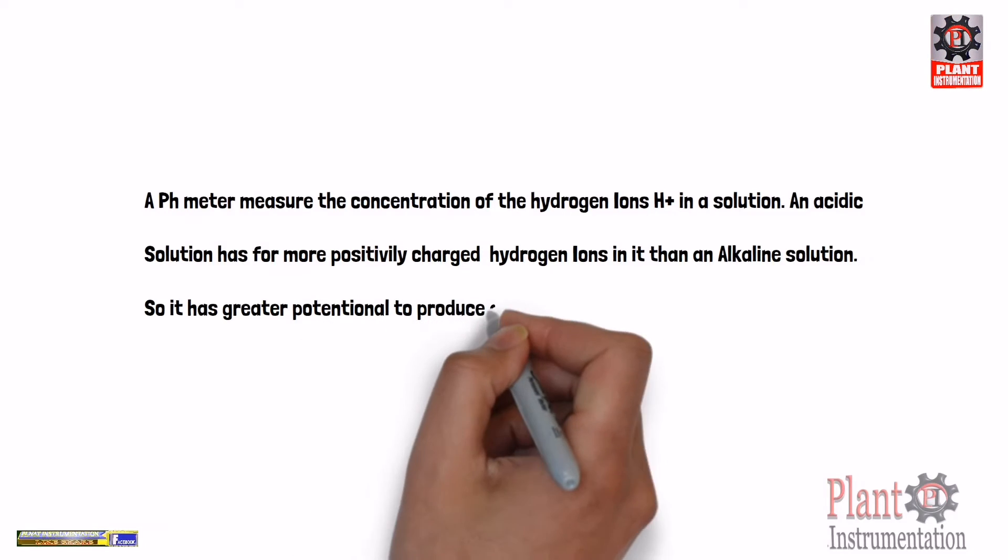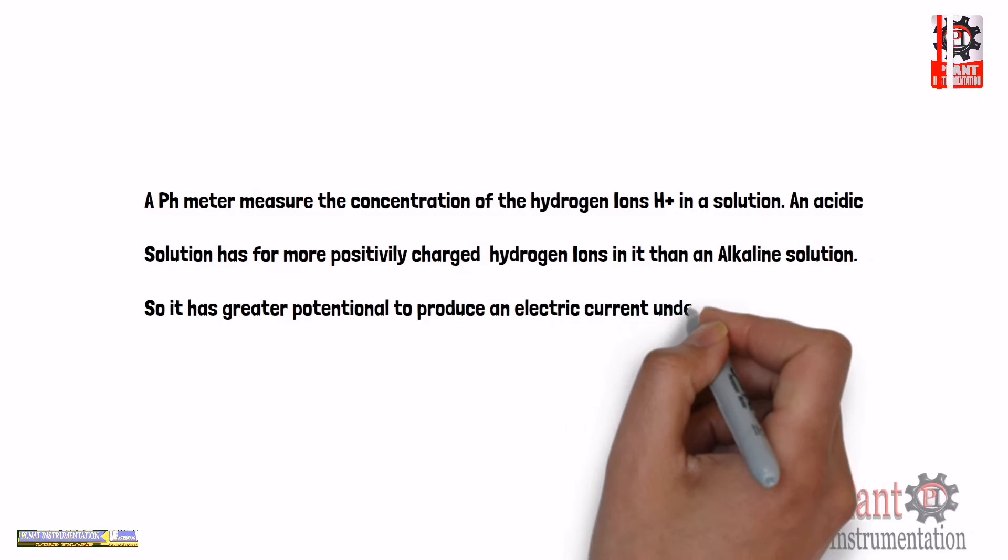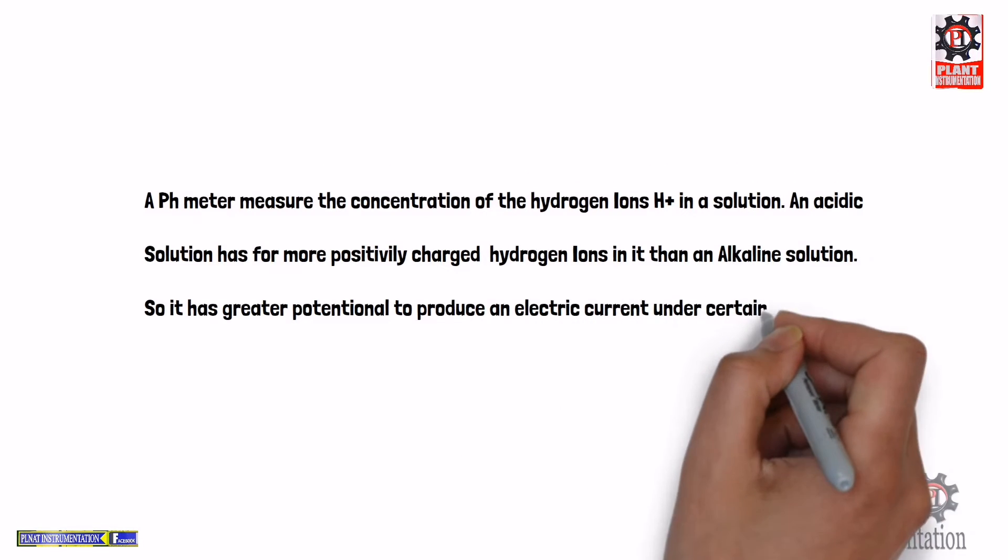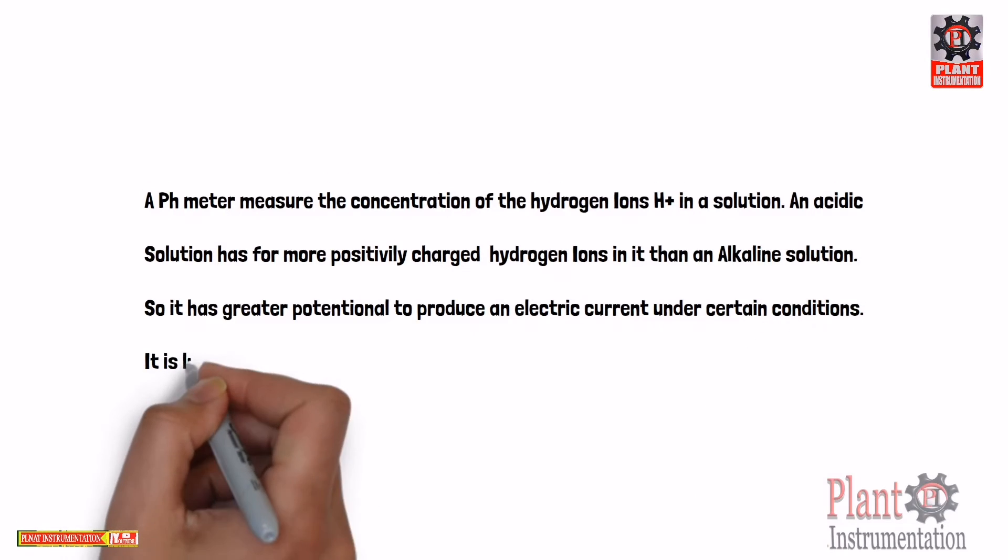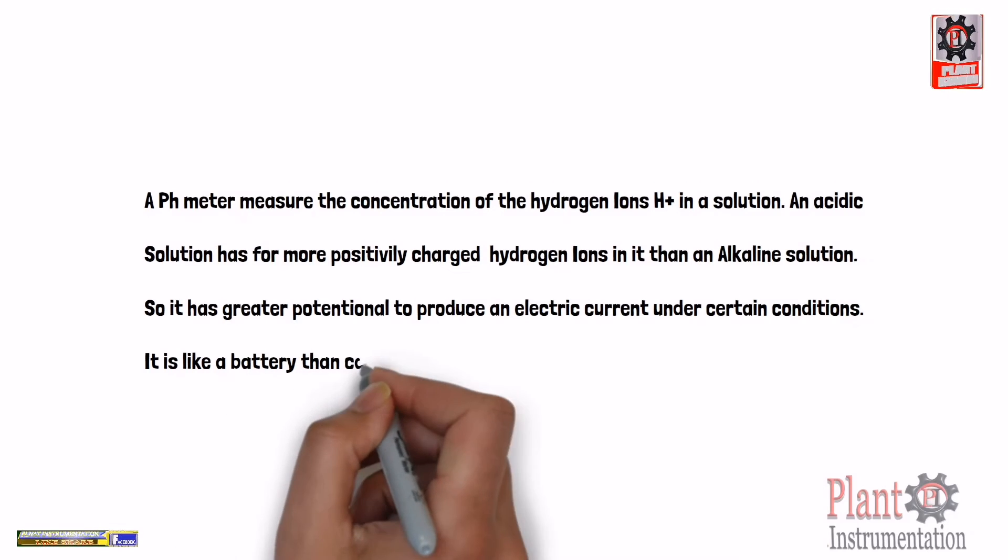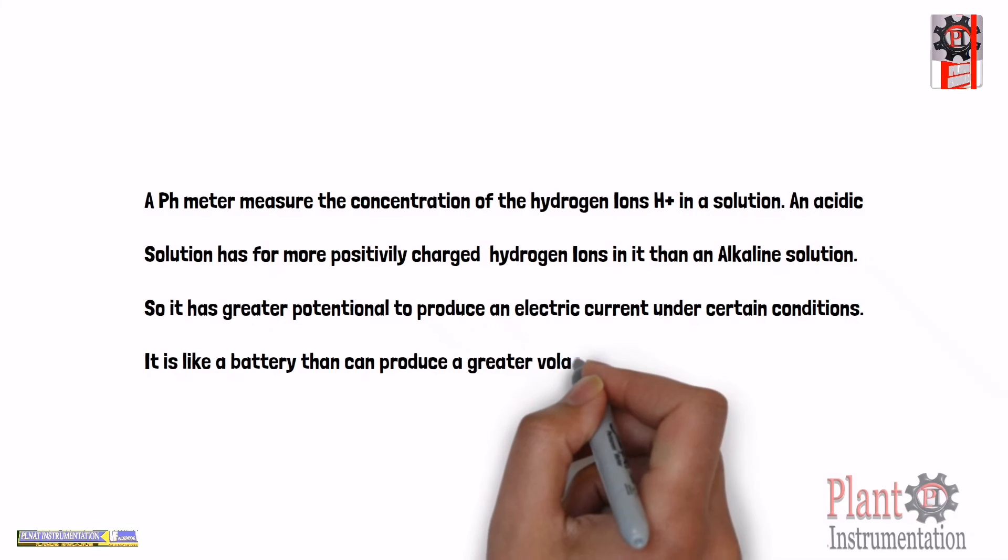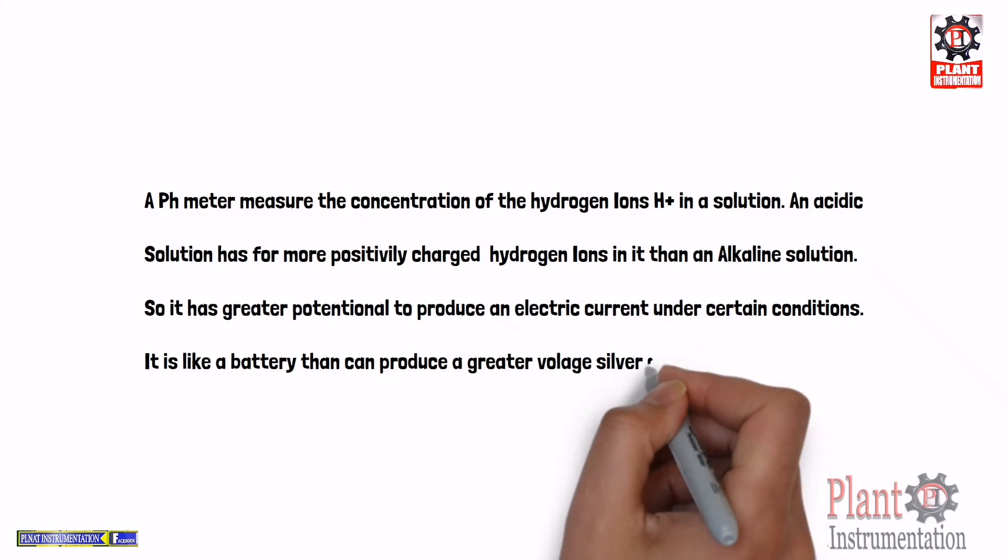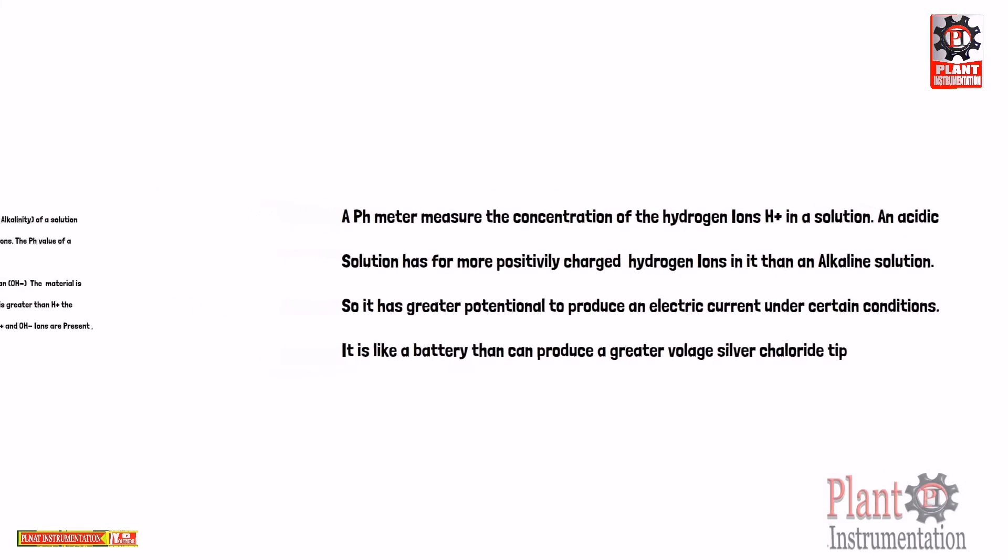A PH meter measures the concentration of the hydrogen ions H+ in a solution. An acidic solution has far more positively charged hydrogen ions in it than an alkaline solution, so it has greater potential to produce an electric current under certain conditions. It is like a battery that can produce a greater voltage.